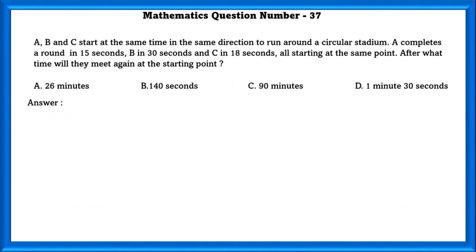Mathematics question number 37. A, B and C start at the same time in same direction to run around a circular stadium. A completes a round in 15 seconds, B in 30 seconds and C in 18 seconds. All starting point at the same point. After what time will they meet again at the starting point?